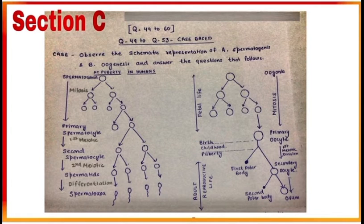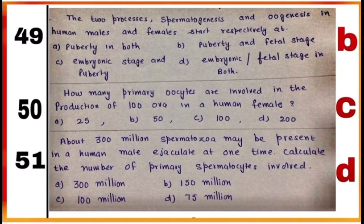Question number 49 to 53 are case-based questions. Here the case given is the schematic representation of spermatogenesis and oogenesis in your book on page number 49. These are question number 49 to 51 based on the case given.